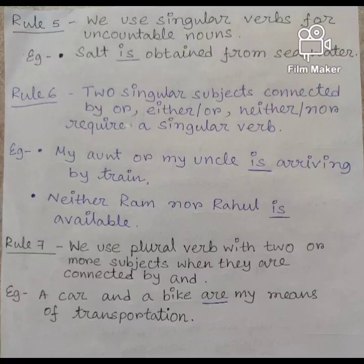Rule 6: two singular subjects connected by either/or or neither/nor require a singular verb. Example: my aunt or my uncle is arriving by train. You can see that here two subjects are connected by 'or' and that's why we have used a singular verb in the sentence.